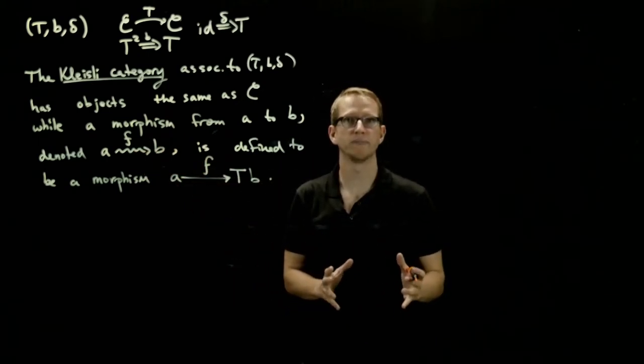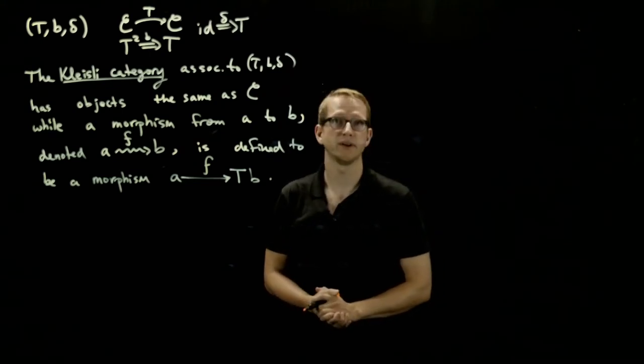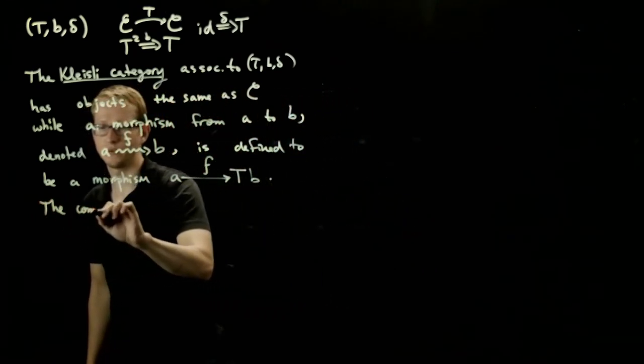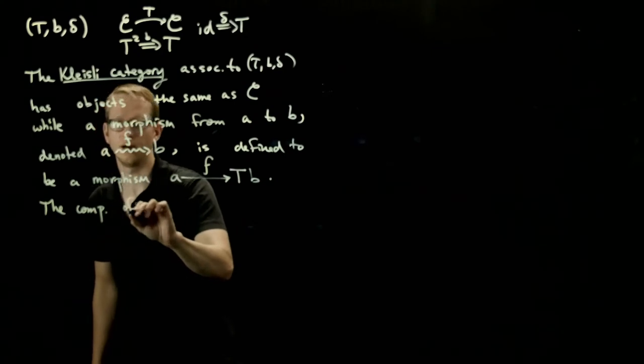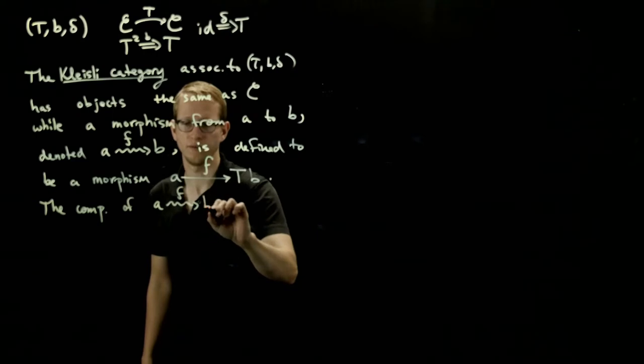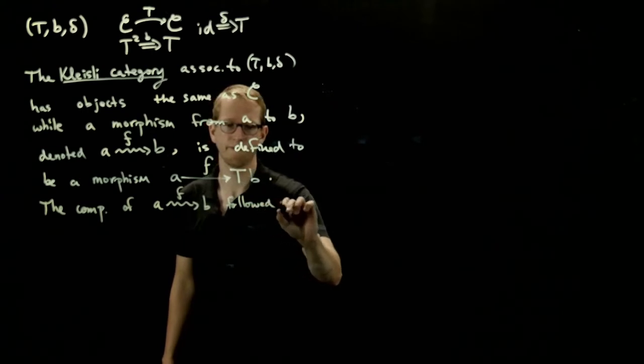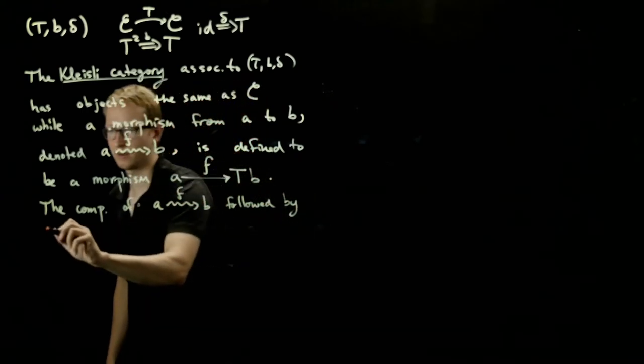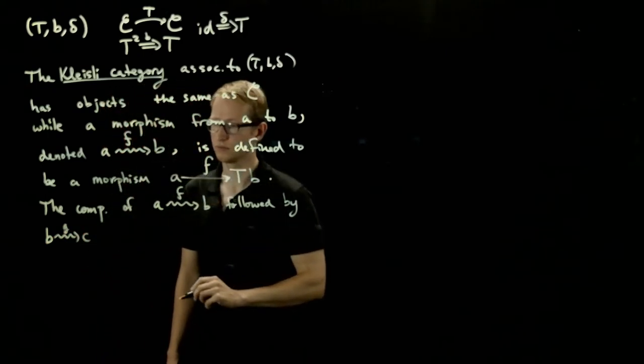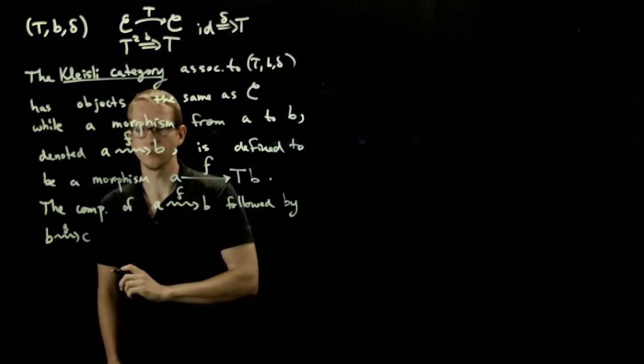This tells us what the objects and the morphisms are in this associated Kleisli category, and we still have to define the composition. The composition of two morphisms, let's say F from A to B, followed by G from B to C. If we unravel what this looks like, it doesn't seem like everything is going to match up.